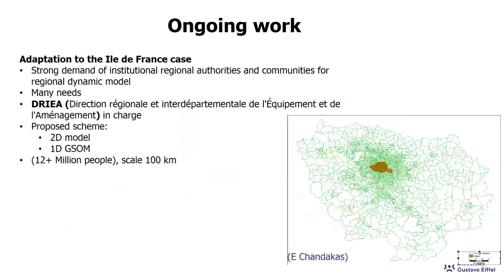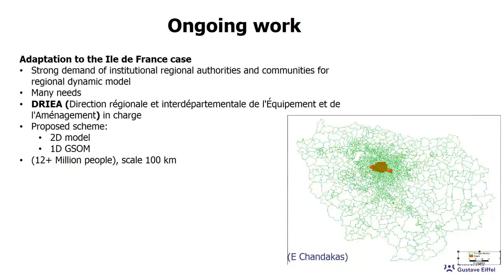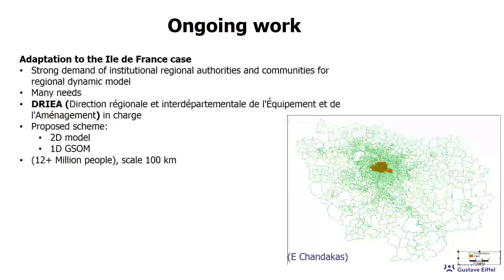There is ongoing work concerning the Île-de-France case, because there is extremely strong demand from regional authorities, local communities, and departments. This is managed by the DRIEA — the Direction Régionale et Interdépartementale de l'Equipement et de l'Aménagement — which handles regional civil engineering and transportation. The proposed scheme is a 2D model for the very dense parts and a 1D GSOM model for the major infrastructure, at a scale of about 100 kilometers and a population of about 12 million.